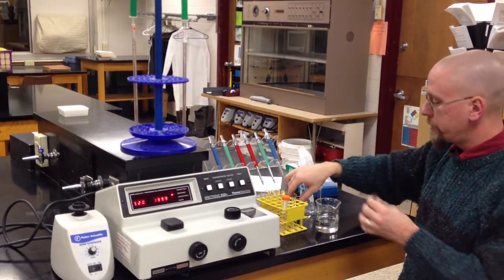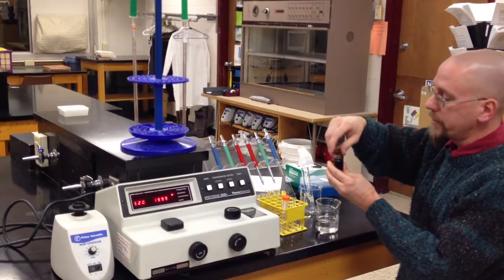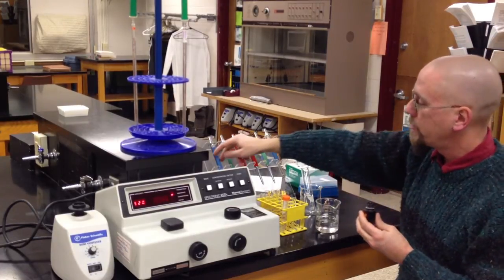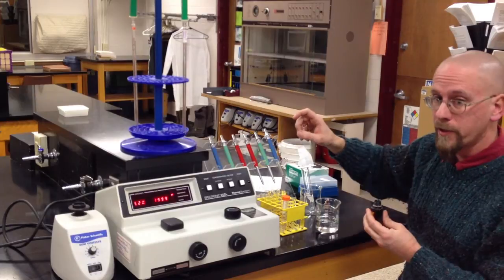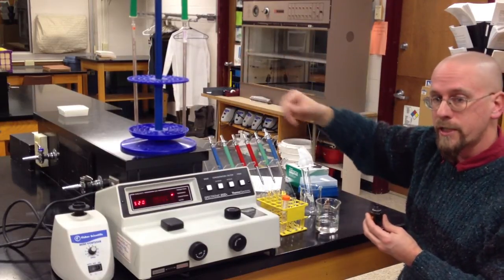Into this, what we're going to do is deposit 100 microliters of iodine. Now 100 microliters is a very small volume. We can't use regular pipettes for this. That's only one-tenth of a milliliter.